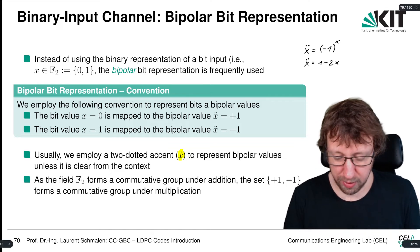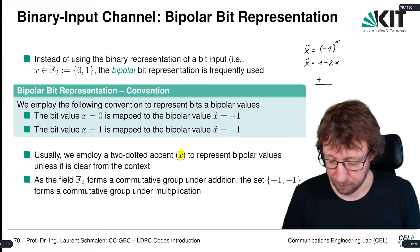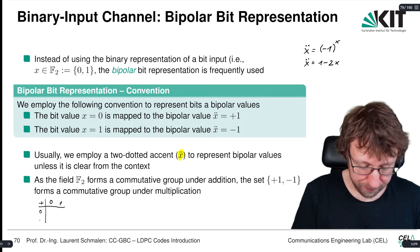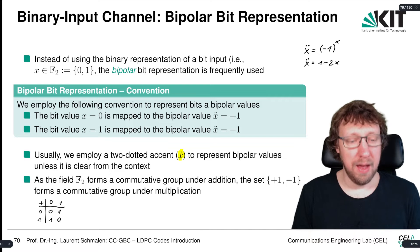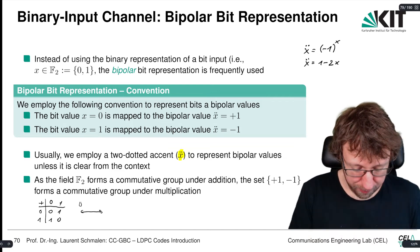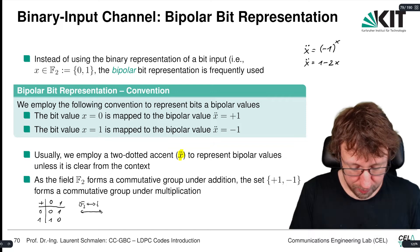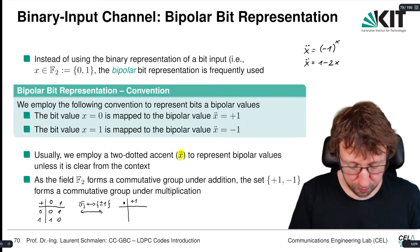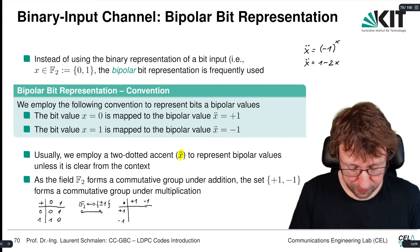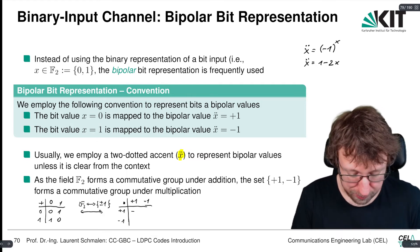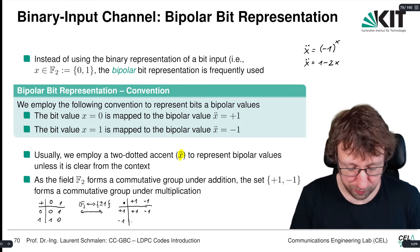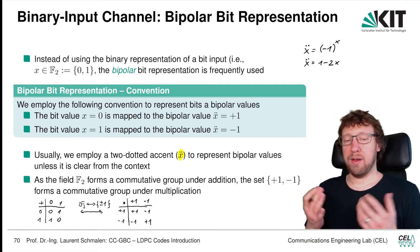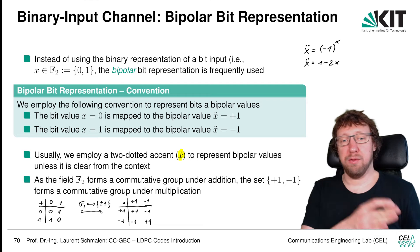We can see this via the addition table for 0 and 1 — this is the exclusive-or operation. Now going from F2 to {+1, -1} and using the multiplication table: 0 is mapped to plus 1, 1 is mapped to minus 1. We have plus 1 times plus 1 equals plus 1, plus 1 times minus 1 equals minus 1, minus 1 times plus 1 equals minus 1, minus 1 times minus 1 equals plus 1. We see that the operations are preserved, confirming the isomorphism between the two representations.